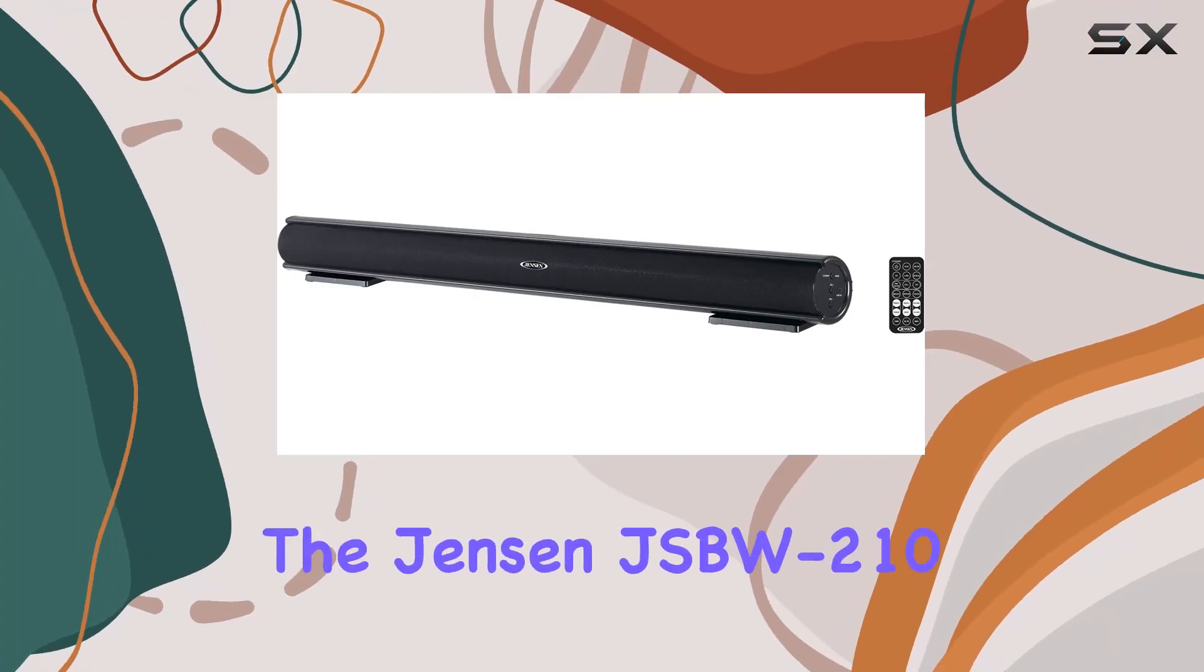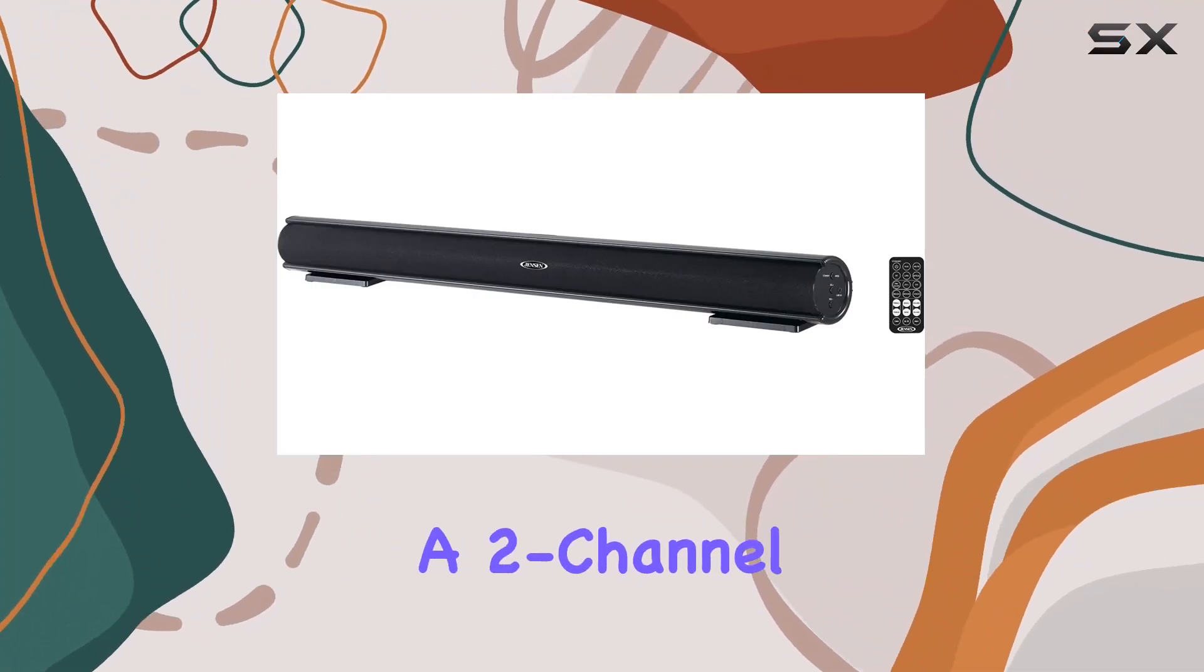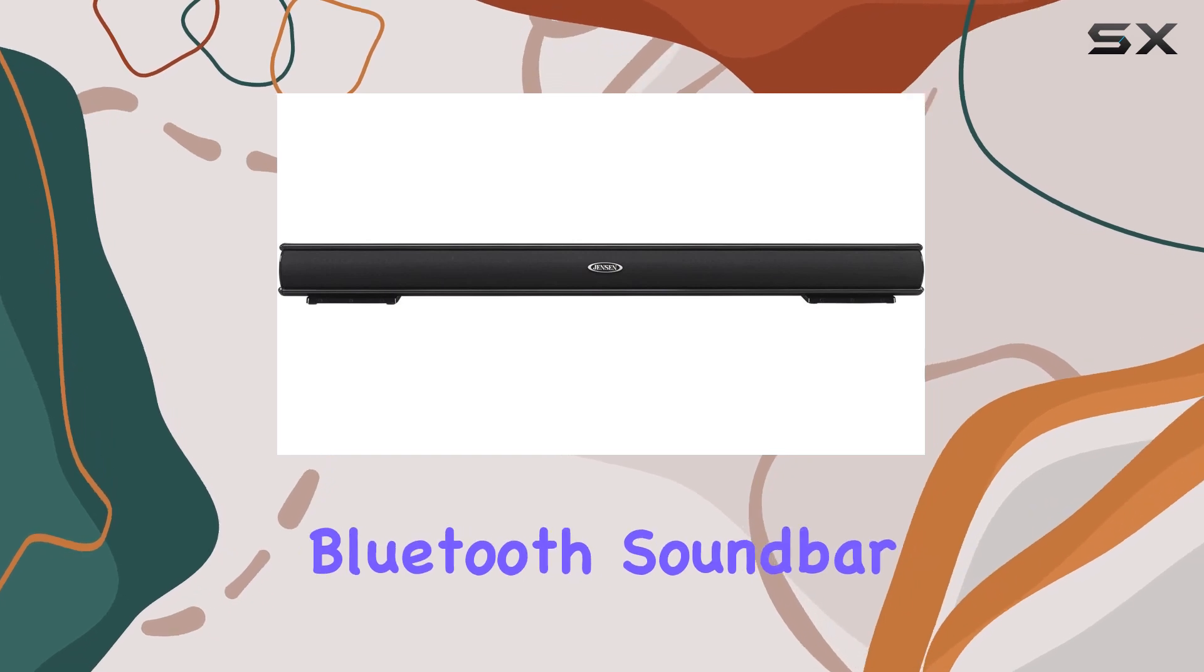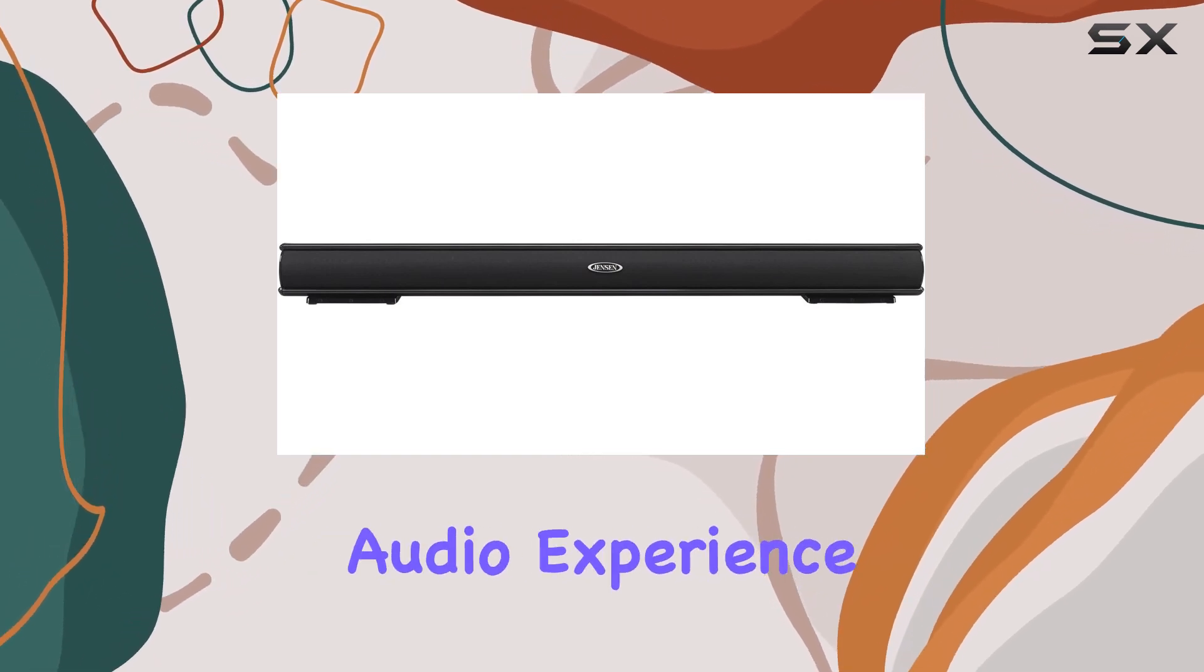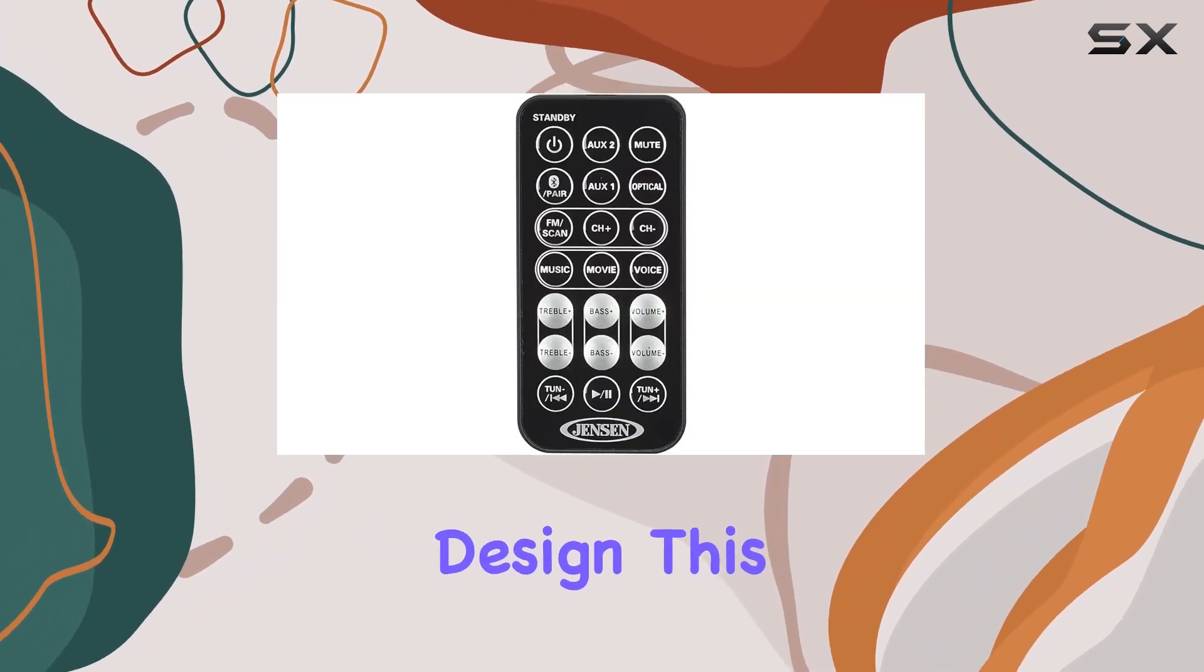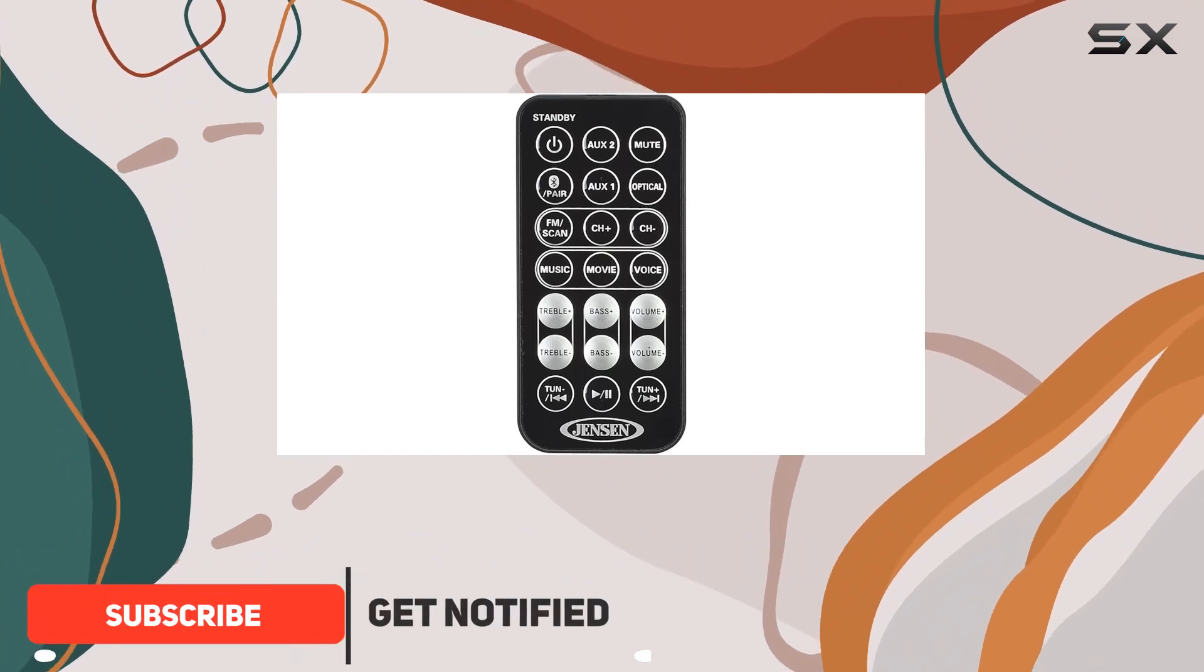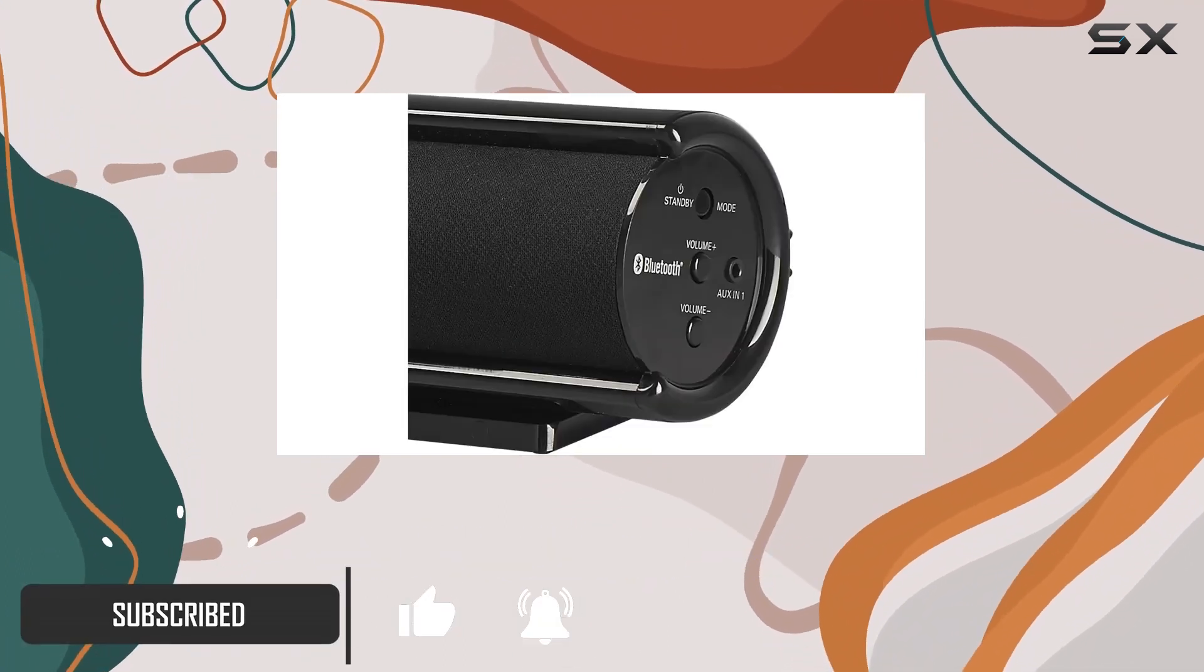Today, we're diving into the Jensen JSBW210, a two-channel wall-mountable Bluetooth soundbar that promises to elevate your audio experience. With its sleek design, this soundbar not only complements your entertainment setup but also delivers on functionality.